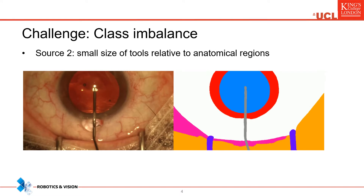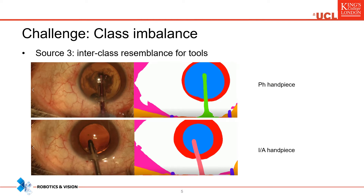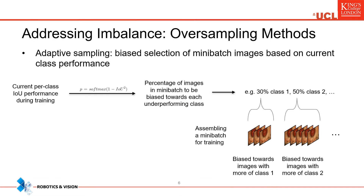Secondly, even when tools are present in the video frame, they make up a small percentage of pixels, especially compared to the anatomies. Thirdly, there are a number of tools that look very similar to each other, making it challenging to distinguish them reliably. For example, these two hand pieces in these pictures can look almost identical but should still be identified correctly. Addressing this imbalance is therefore a necessary element of an effective semantic segmentation solution.